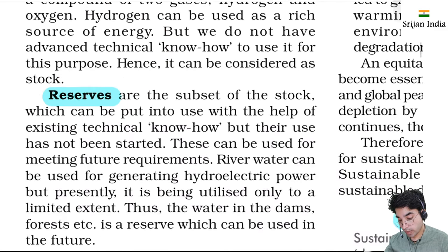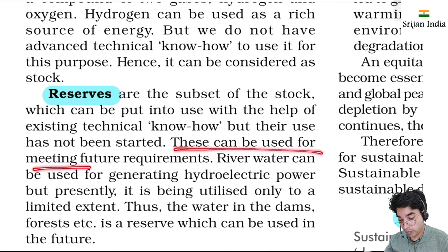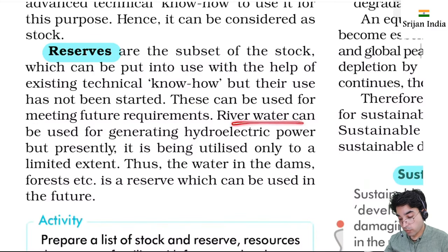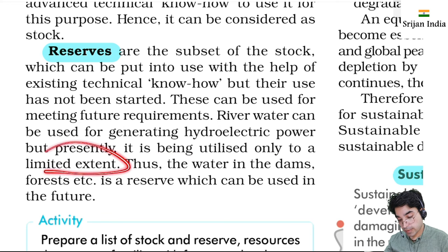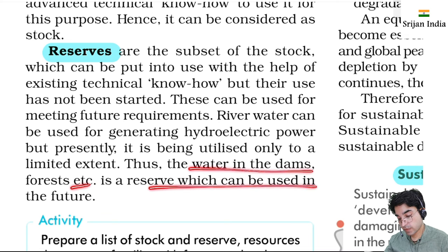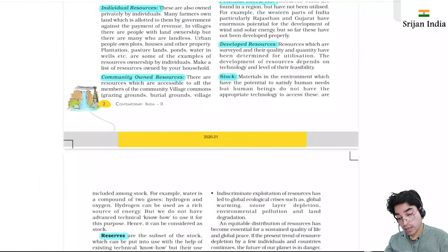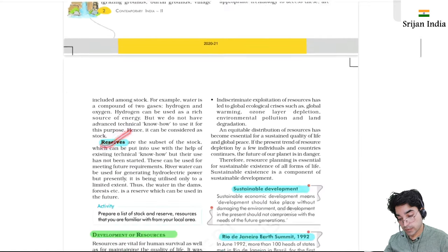Reserves have know-how available and can be used for meeting future requirements. River water can be used for generating hydroelectricity - it is being utilized only to a limited extent. Water in dams and forests are reserves which can be used in the future.